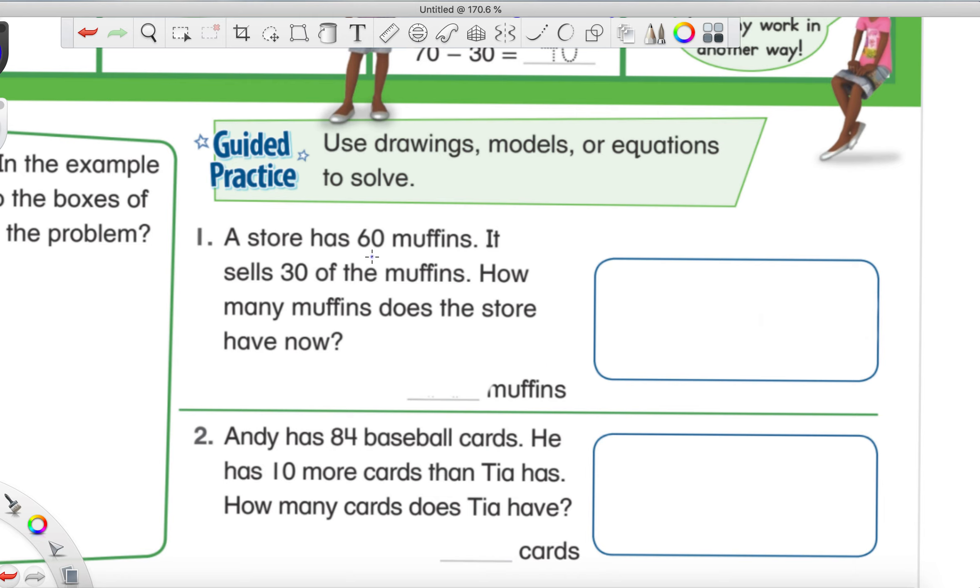So remember, every time we see a number, or hear a number, we got to make sure we stop and circle it because it's going to be very important. A store has 60 muffins. Well, we hear 60, so we're going to go ahead and circle that. That's super important. It sells 30 muffins. You know what? For some reason, I'm thinking the word sells might be special. When you sell something, does someone take it from you? Like, don't they buy it? Yeah, so then you have less. So you know what? I'm going to underline this word. Because if we have less in the end, I think that means we're going to be subtracting.